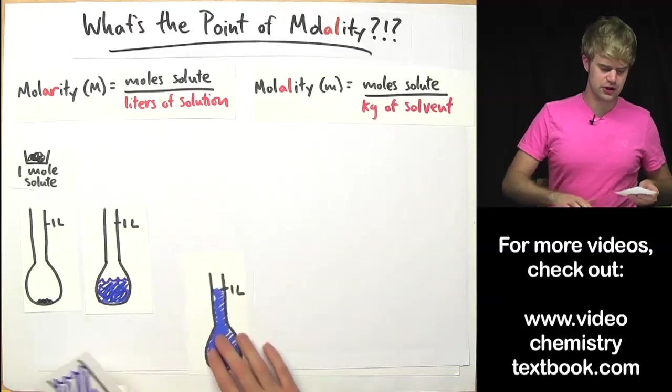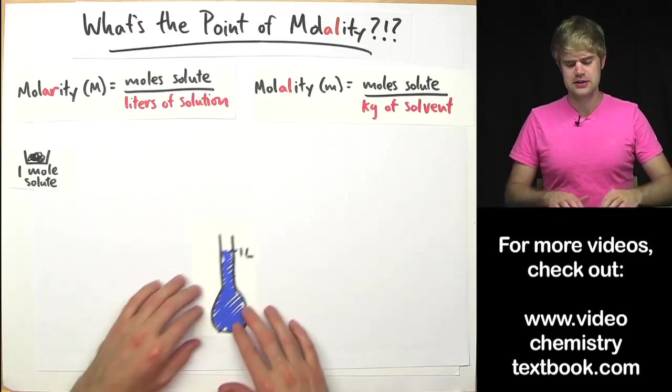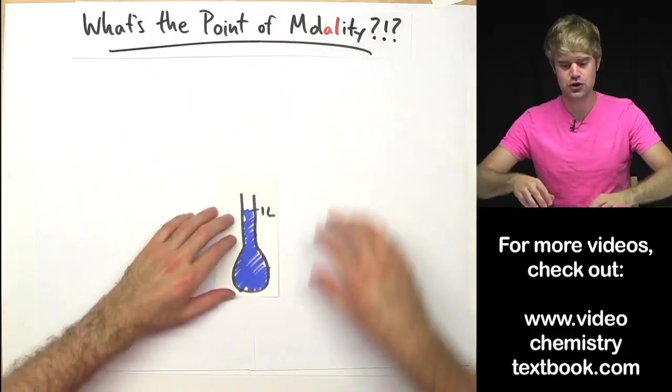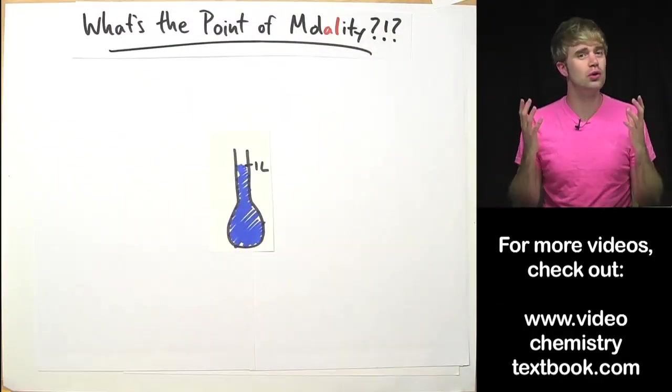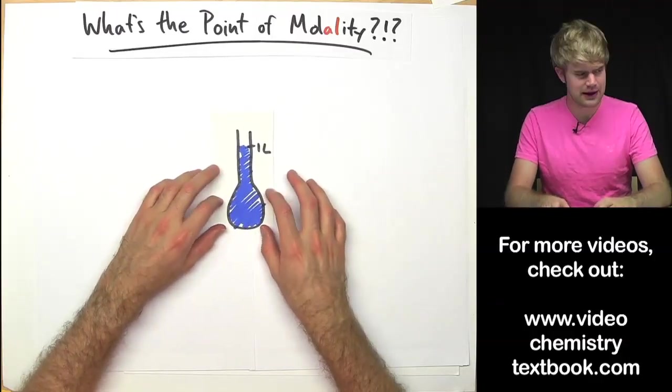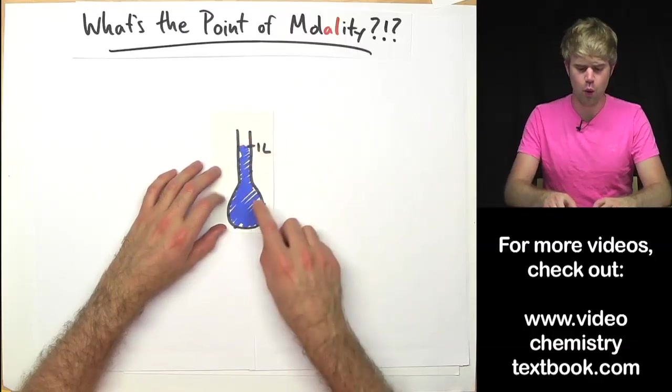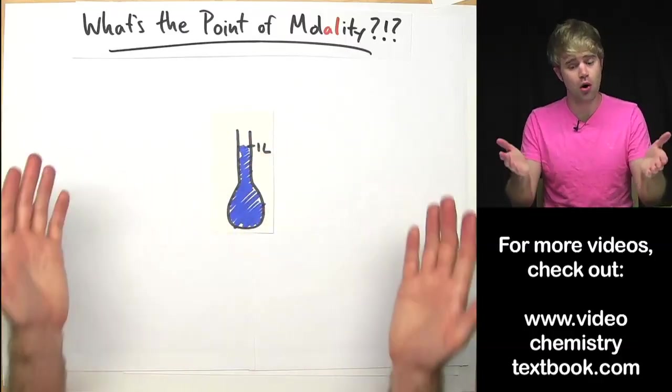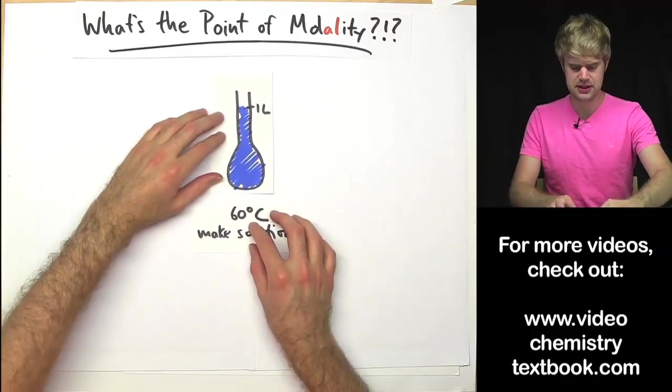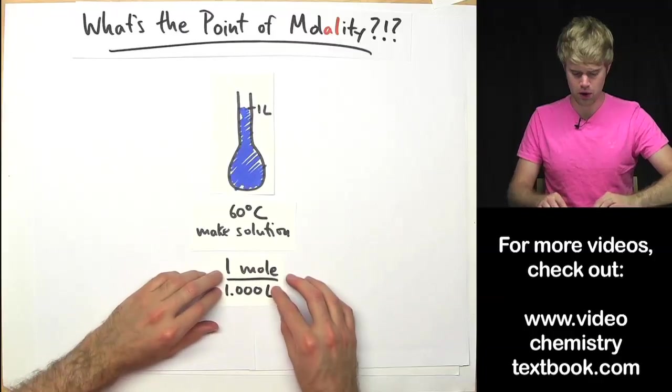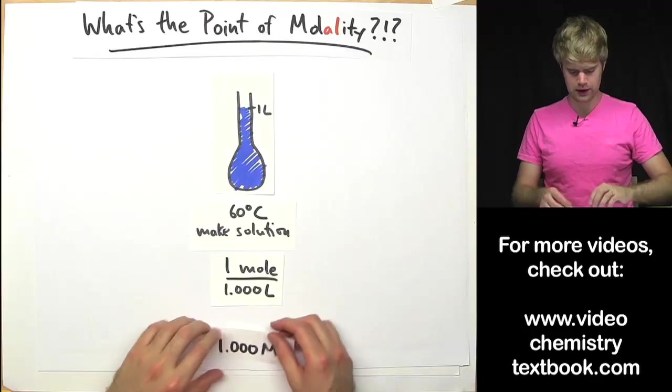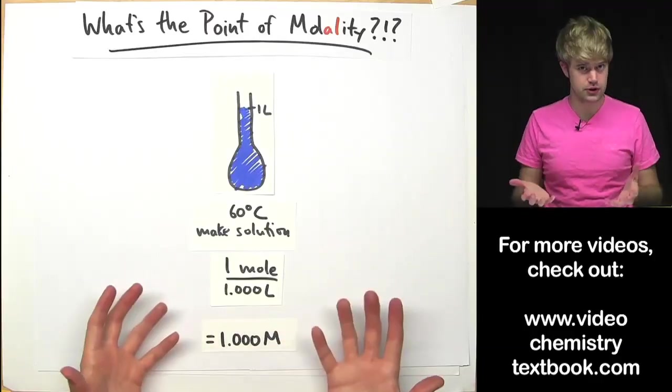Here is another advantage of molality. Molality stays constant over a wide range of temperature and pressures whereas molarity can change. Let me show you how this happens. So let's imagine that right here I have a one molar solution, one mol in one liter of solution, and I've made this solution at 60 degrees Celsius. As I said it's one mol in 1.000 liters, it's very precise, and one mol in one liter is going to give me a one molar solution.